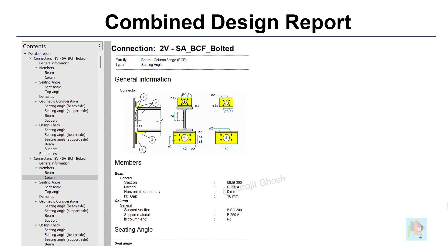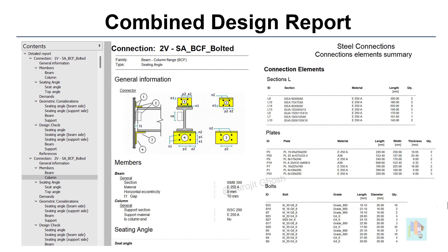We can also generate a combined design report for all connections, with schematic diagrams of each connection, information about the joint, and all design calculations. If required, we can get a summary of connectors used for design — such as length, dimension, thickness, or quantity of angles and plates used in different joints, and quantity of specific bolt types based on length and diameter. This is extremely helpful for quick estimation and procurement.